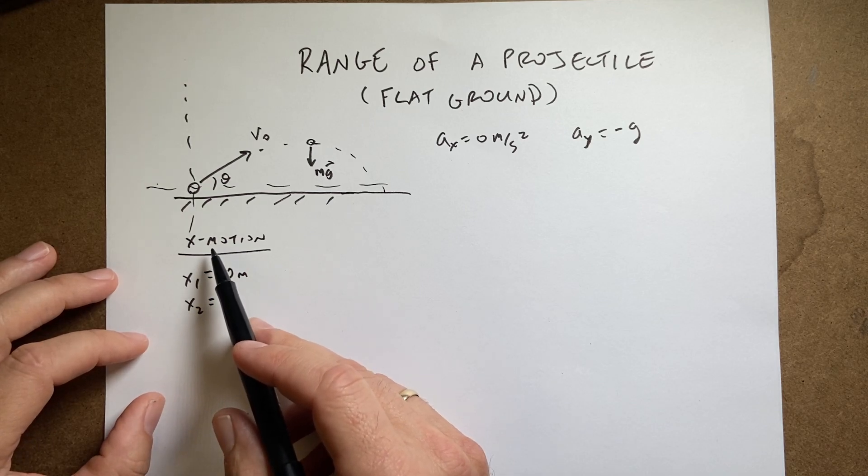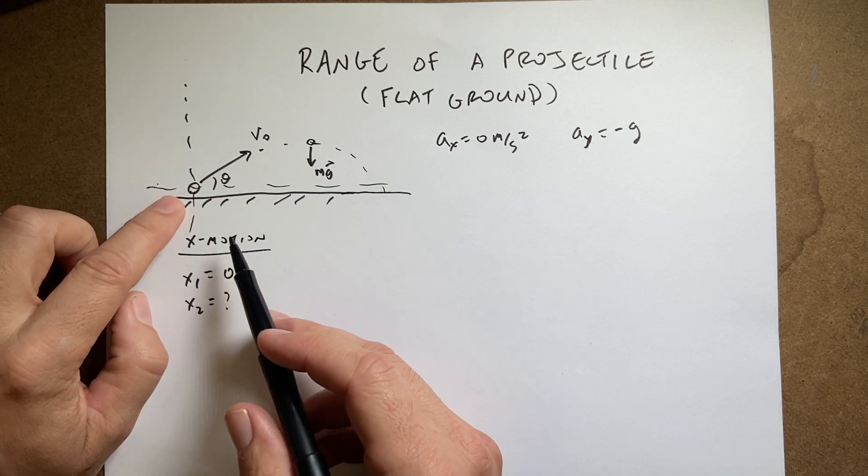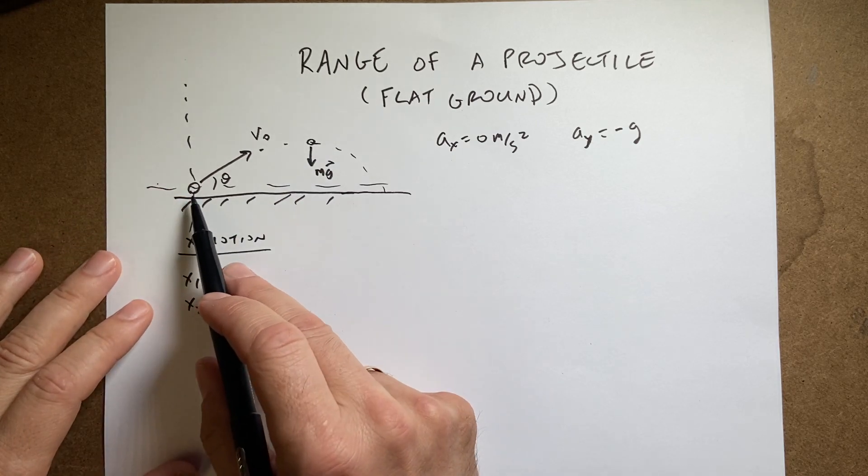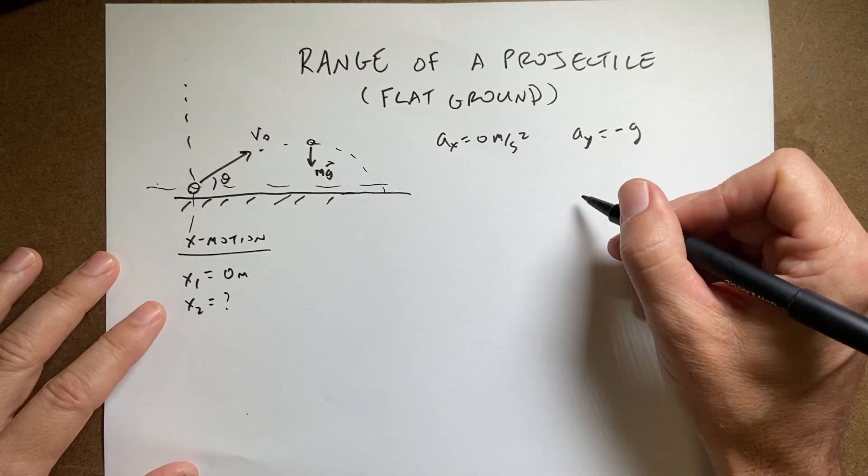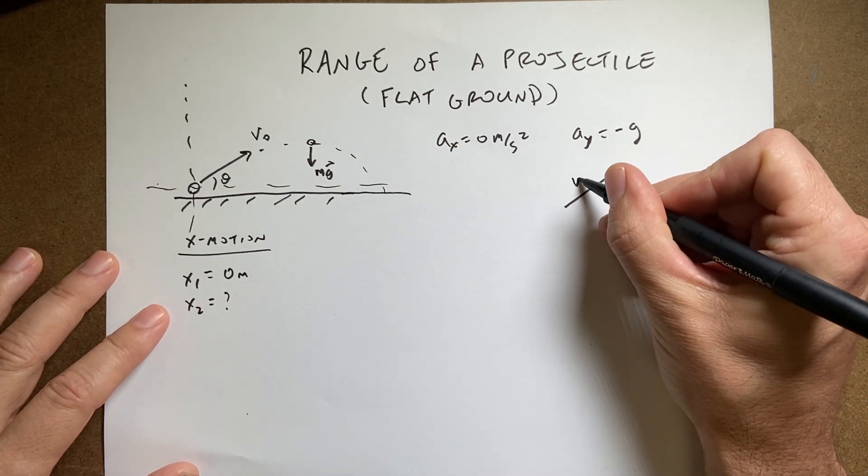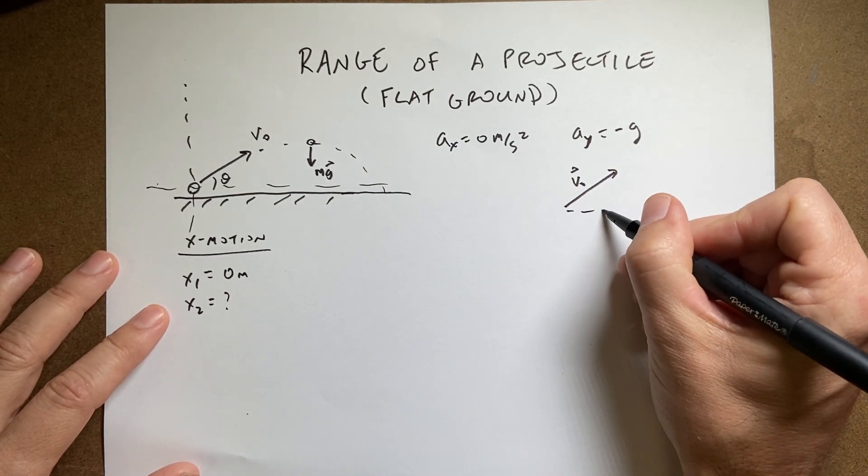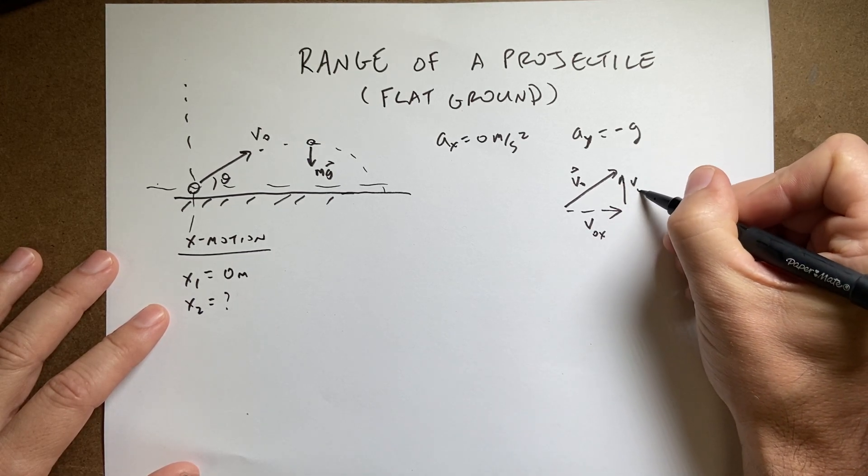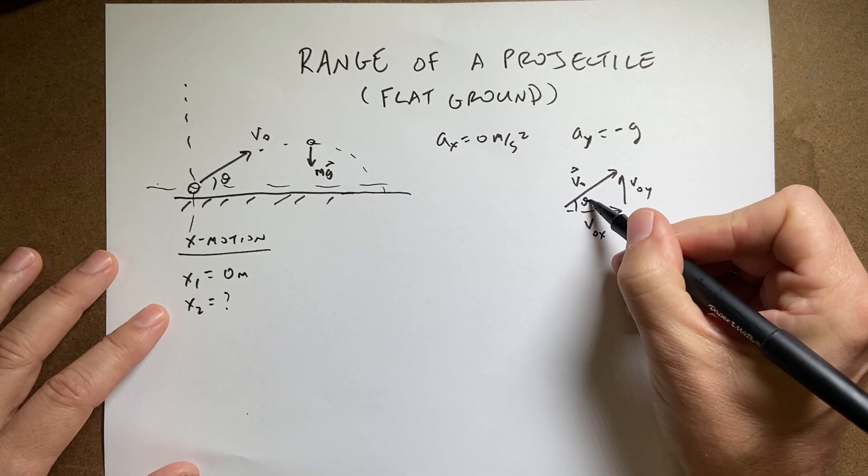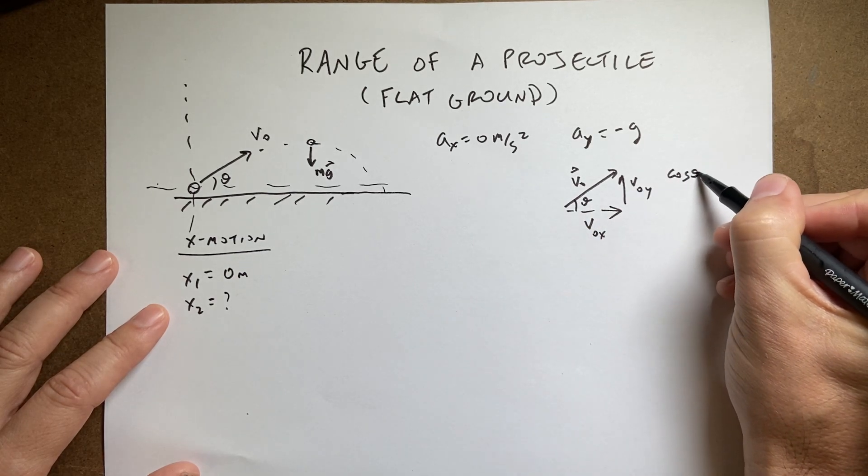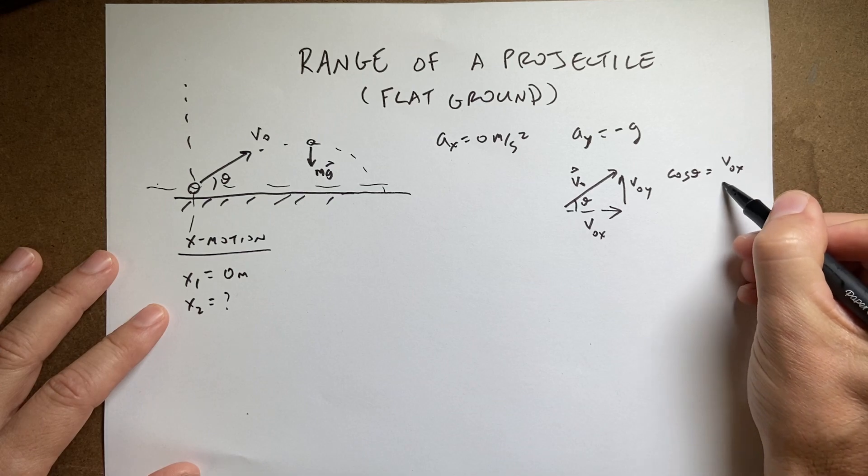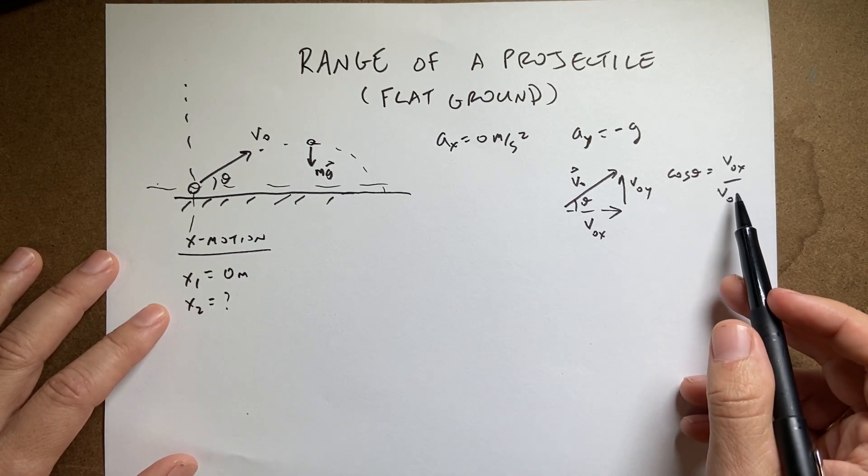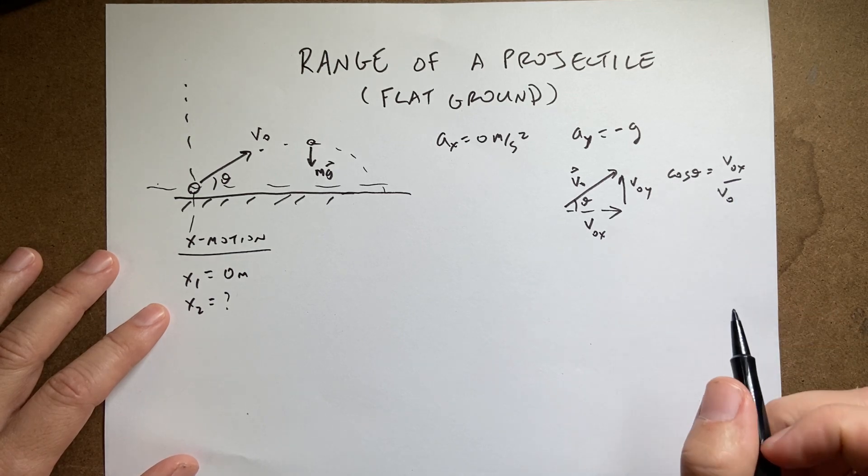Also in the x motion, I do know the x velocity. Notice there's no force in the x direction. So there's no change in velocity in the x direction. So if I draw this vector, v0, that's actually a vector. This is the v0x. This is v0y. And that angle's theta. So cosine of theta is adjacent over hypotenuse. So that's v0x divided by v0. So if I solve for v0x, I get cosine theta times v0.